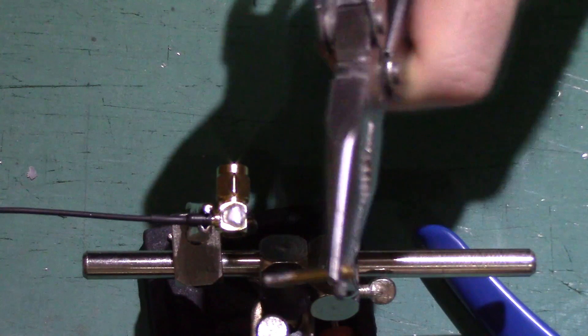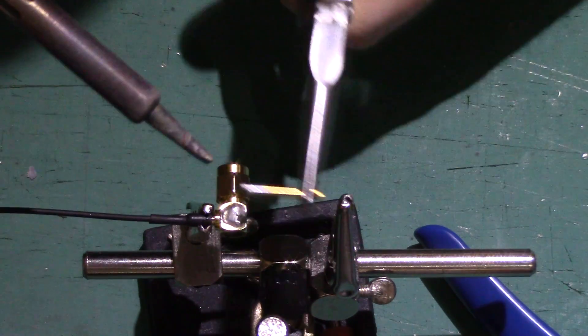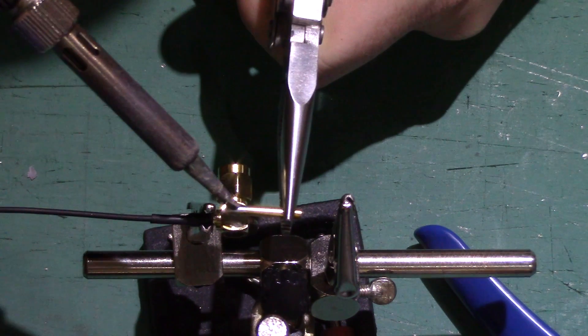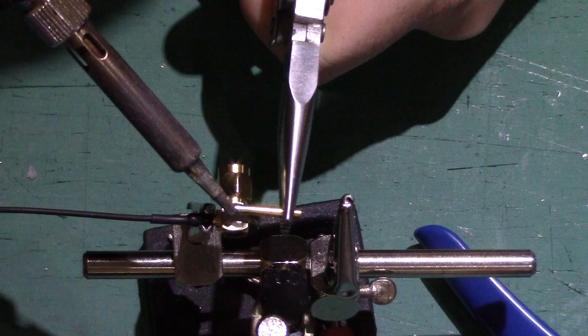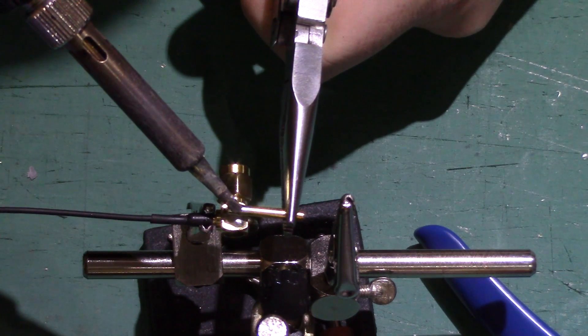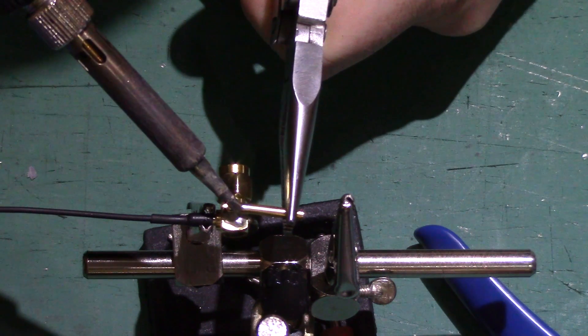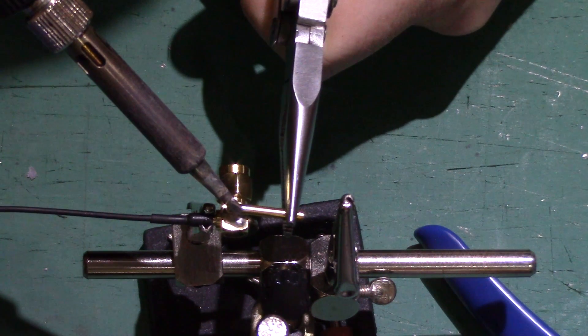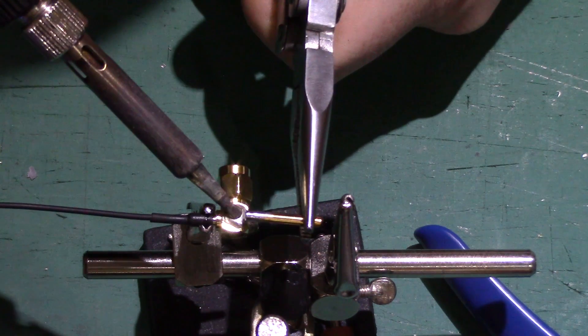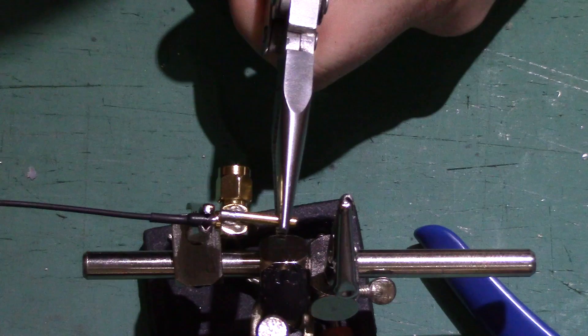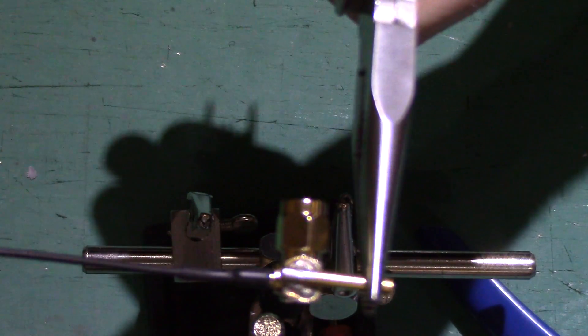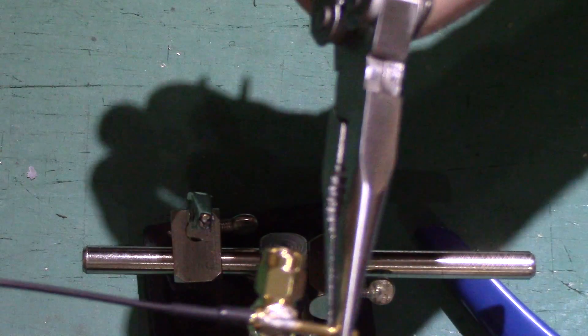I've got a pair of pliers in hand because this thing is going to get pretty hot. I'm going to heat the solder on the bullet up first, then touch that against the solder on the SMA connector just to heat it up. And now we are joined.